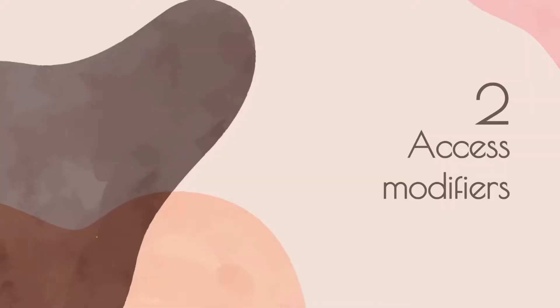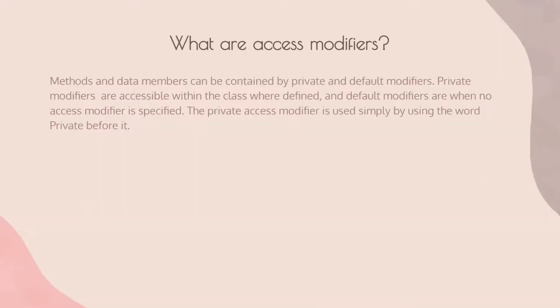Next we'll be talking about access modifiers. Methods and data members can be contained by private and default modifiers. Private modifiers are accessible only within the class where they are defined, while default modifiers apply when no access modifier is specified.